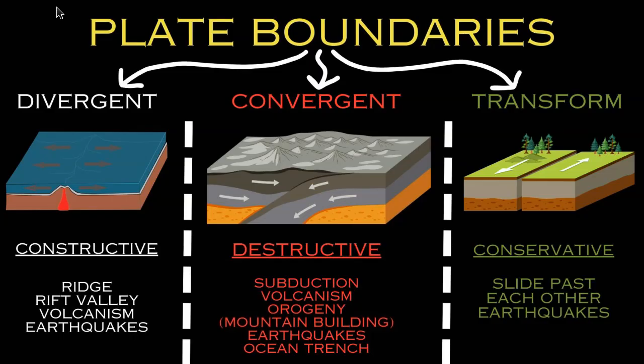When continent meets continent at a convergent plate boundary, the plates have similar densities and there is no subduction and very little if any magma production, so no volcanoes. Instead, you get orogeny — mountain building — specifically fold mountains. The best example is the Himalayan mountains, where India converged into Eurasia about 40 million years ago, or the Alps, where Italy is converging into Europe.